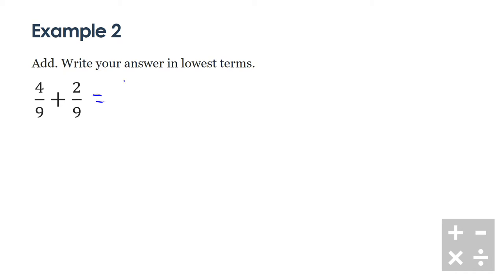So we have 4 plus 2, we're going to put that over top of the same denominator we started out with, so over 9 in this case. I'm going to solve my addition statement in my numerator: 4 plus 2 is equal to 6, and the denominator stays the same, so we have 6 over 9.